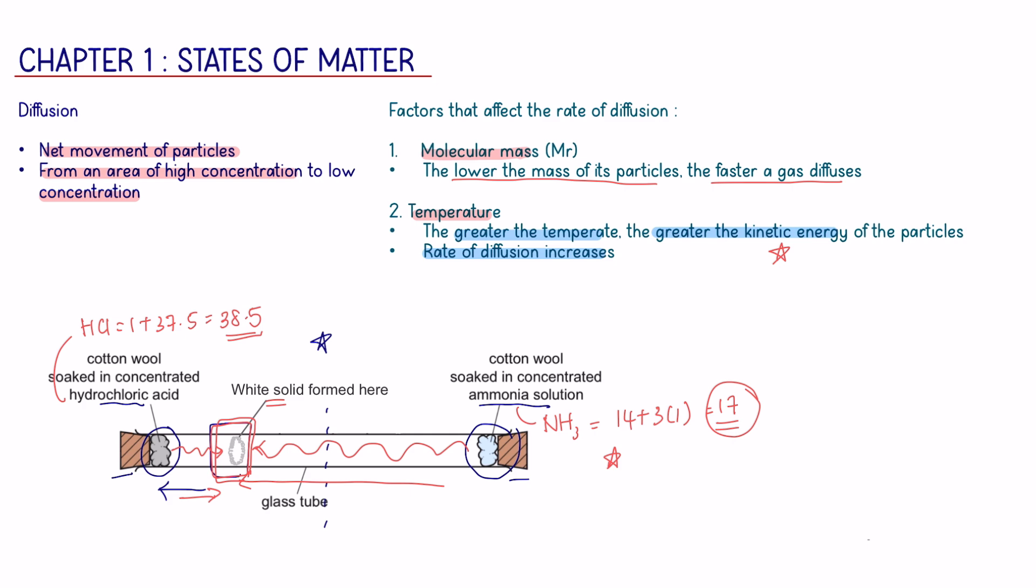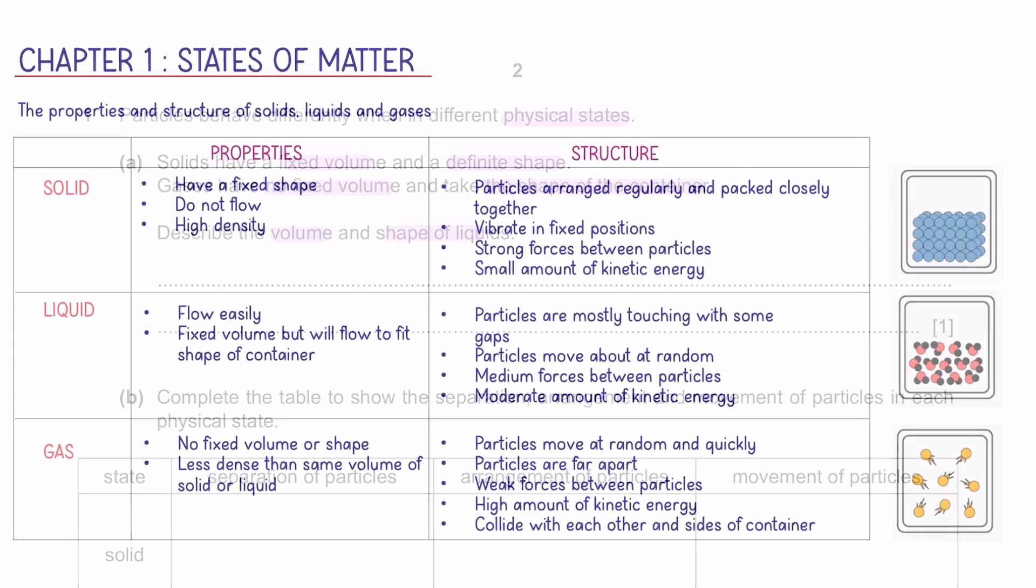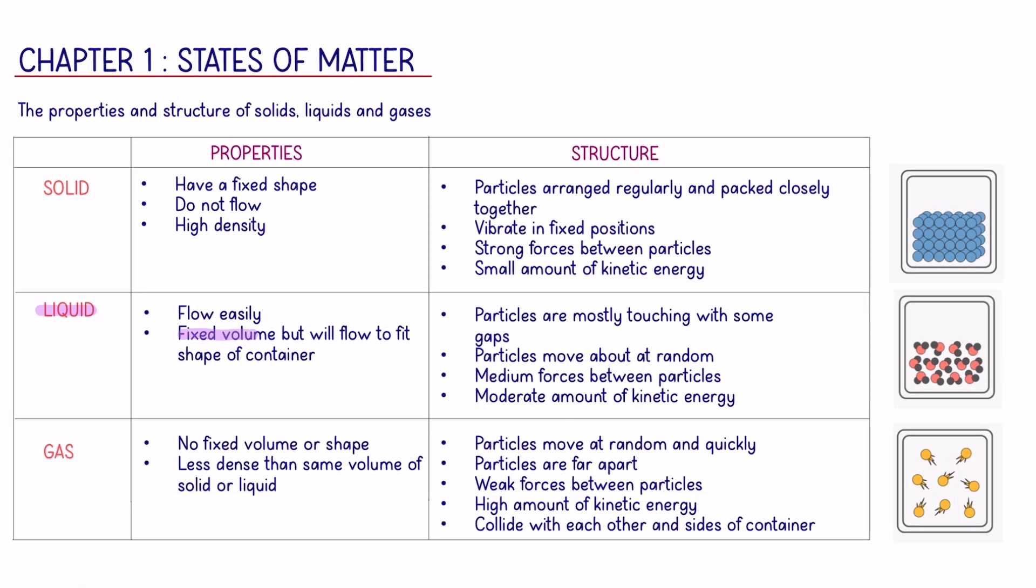Alright, that sums up everything important in your first chapter of States of Matter. Now, we will look into some past paper questions relating to this chapter. Question 1: Particles behave differently when in different physical states. Solids have a fixed volume and a definite shape. Gases have no fixed volume and take the shape of the container. Describe the volume and shape of liquids. So, liquids have fixed volume and it takes the shape of the container.